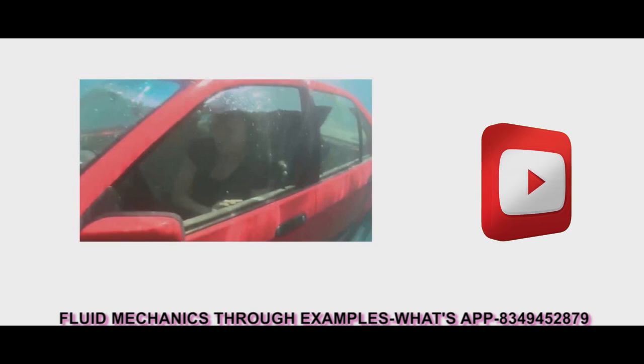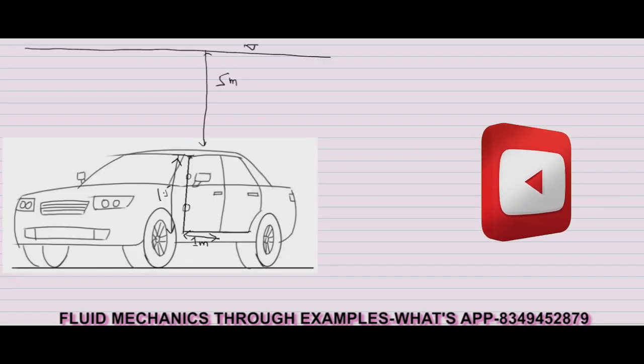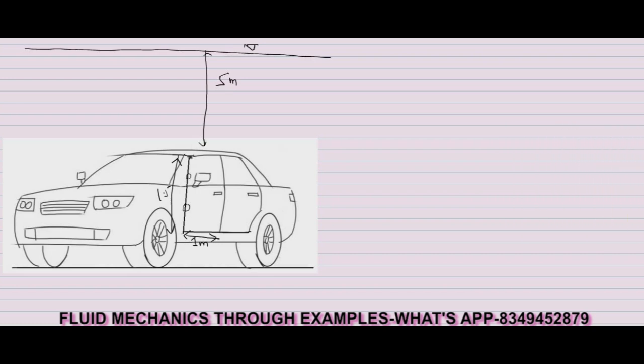In order to solve this problem, let's put some numeric values. Let's say the car is sunk 5 meters below the water level. The dimension of the car door is 1.5 meter by 1 meter and this car door rotates about this hinge point.